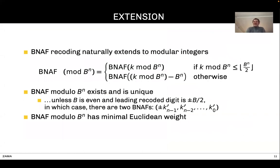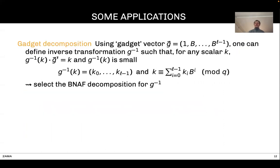We can extend what we have done for integers to modular integers. This is essentially the same result. We can get the modular BNAF from the integer BNAF. Again, we can prove that BNAF exists and is unique—this is almost correct. From that definition, when the first recorded digit is B/2 or minus B/2, then you can flip the digit. In that case, there are two possible BNAFs. We also have that important property that the BNAF has minimal Euclidean weight, and this is key for applications.